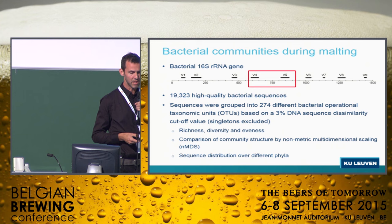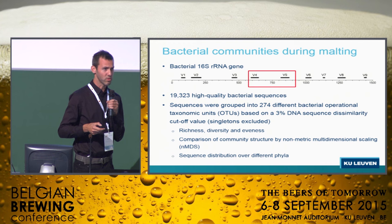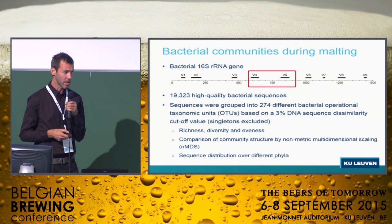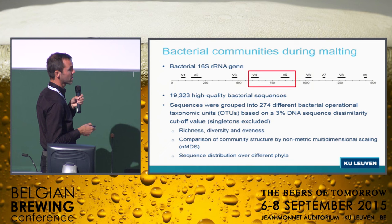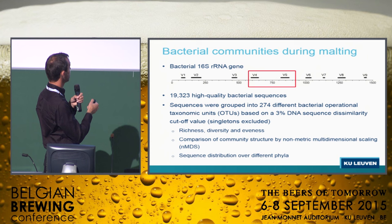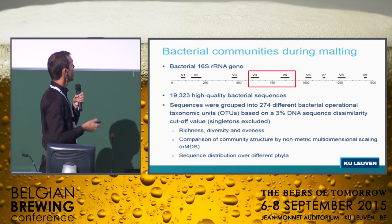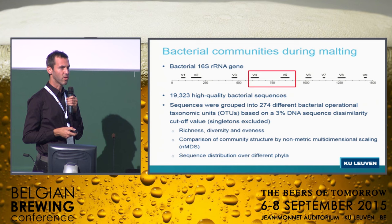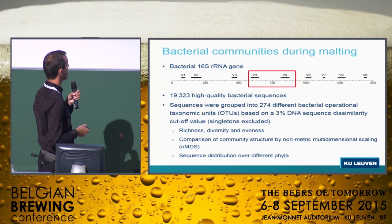We amplified the 16S ribosomal RNA gene from bacteria and ended up with about 20,000 bacterial sequences. These sequences were grouped into operational taxonomic units (OTUs) — a kind of species surrogate based on sequence dissimilarity — ending up with 274 different OTUs. We then looked at several parameters: richness, meaning the number of OTUs present; evenness, taking into account the abundance of the species; and diversity, which is a combination of both parameters.